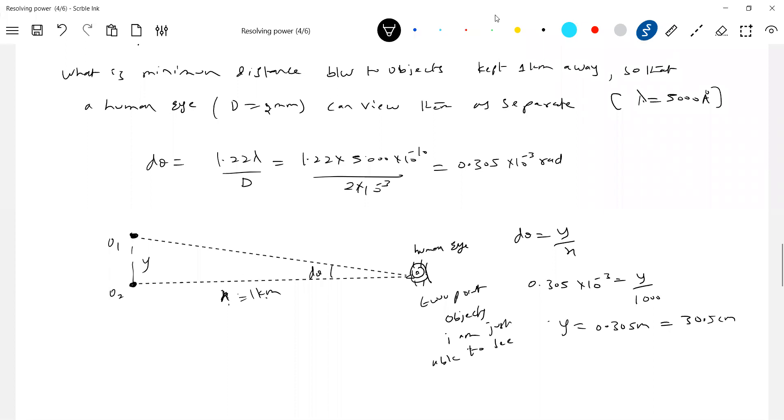If the person moves to 0.9 kilometers, they can clearly see two objects. But if the distance becomes 1.1, 1.2, 1.3, or 1.4 kilometers, then they will see only one object, even though there are two objects there.